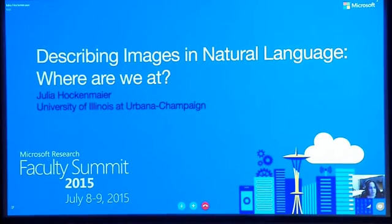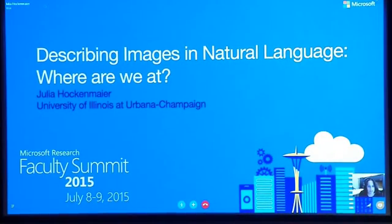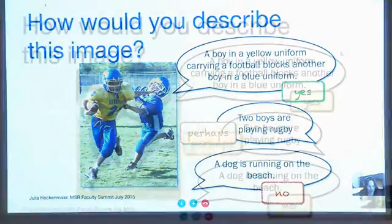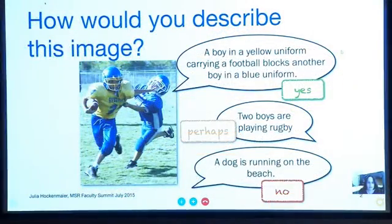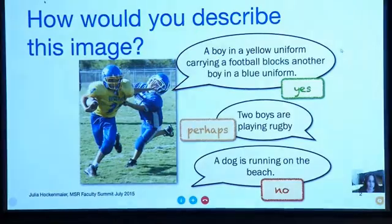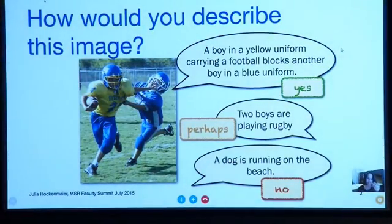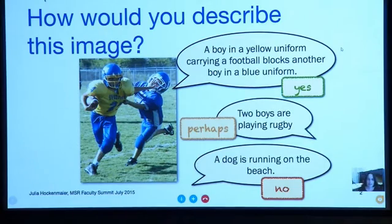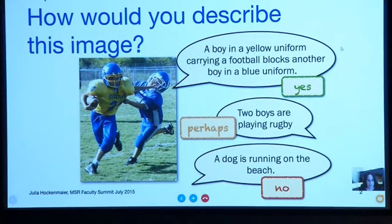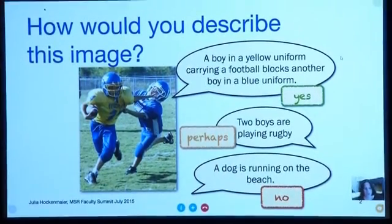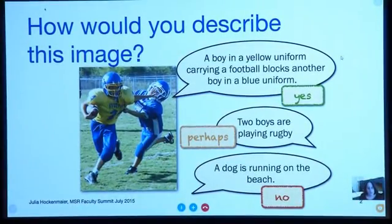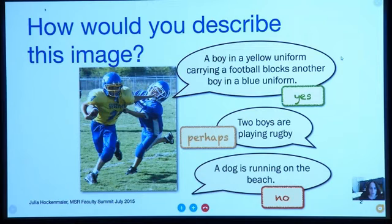I wanted to take stock a little bit about the work on image description over the last year especially, which has received a lot of publicity. I want to take a step back and think about where we are at — have we actually solved this task? What are the next steps? Image description means being able to associate images with complete sentences in English that describe what's going on in the image. Some descriptions might be a little bit wrong — you might think this is rugby when it's American football — but it's probably still an okay-ish description. It's clearly not 'a dog is running on the beach.'